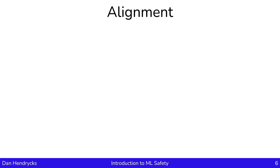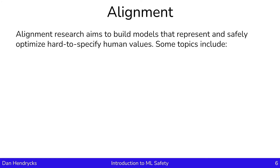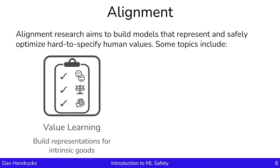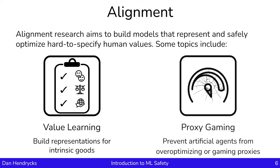The third research area we'll talk about in this course is alignment. Alignment research aims to build models that can represent and also safely optimize human values. These human values are often quite difficult to specify and are complex and sometimes nebulous. One topic in alignment is value learning — a goal of value learning is how can we create representations that model intrinsic goods or things humans care about, like well-being or justice. Another topic in alignment is proxy gaming: how can we make sure that agents don't over-optimize or gain proxy goals that they're given?